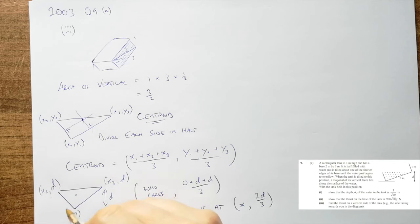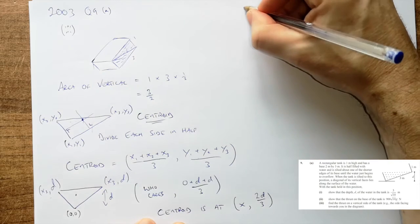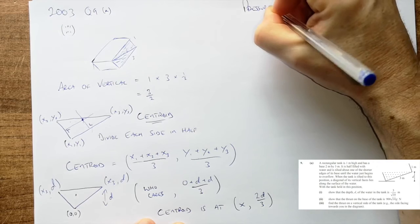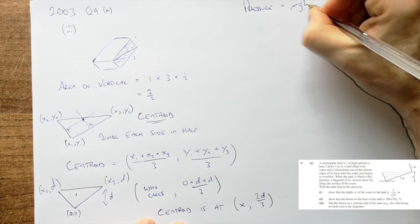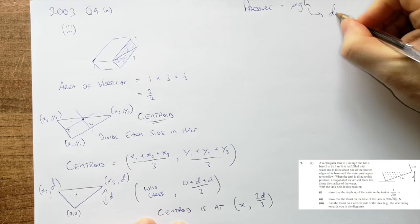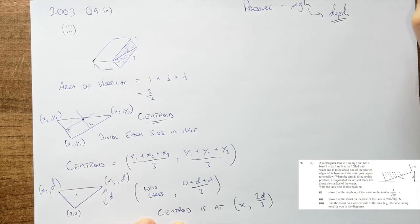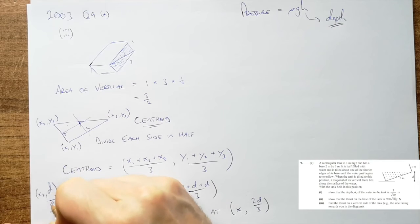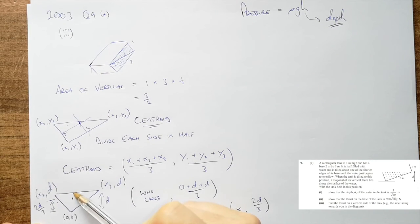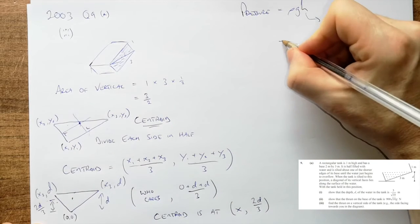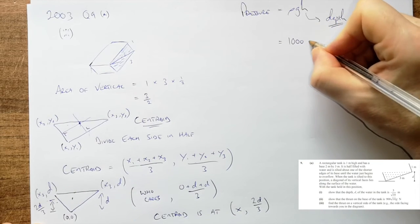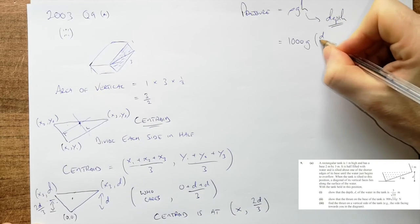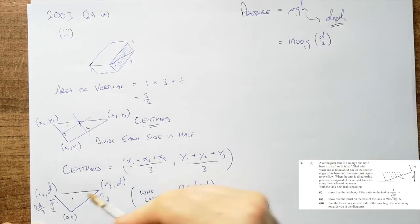Now got to be a little bit careful here. When we're looking for our pressure, our equation of course is rho g h, and h is the depth. This is a little sneaky twist you can kind of get caught up on. So our centroid, come back to this one here, is 2d over 3 up. Of course we care about how far down it is. So in which case we have 1000 for rho by g by d over 3, because it's d over 3 down from the center of the water.